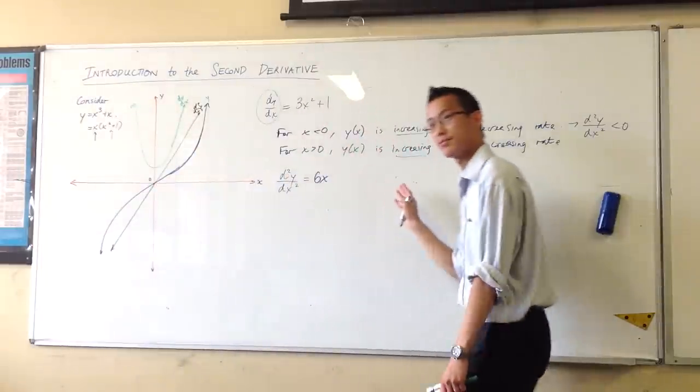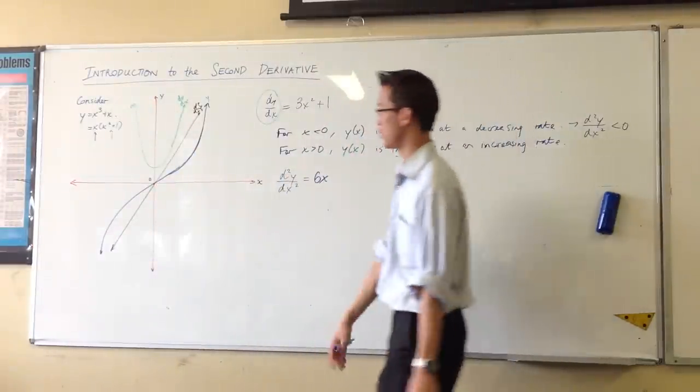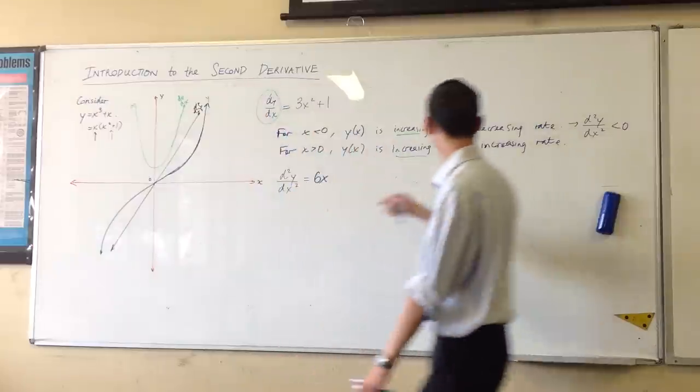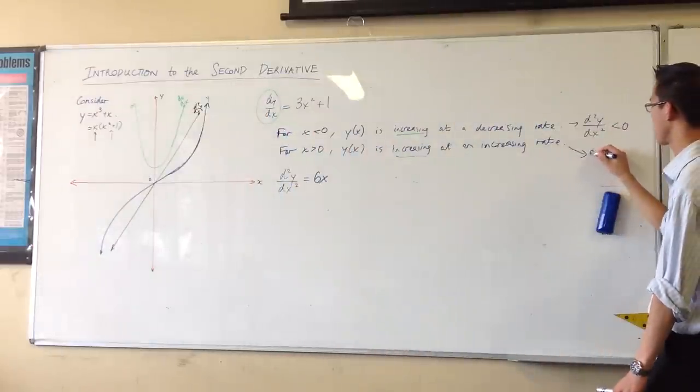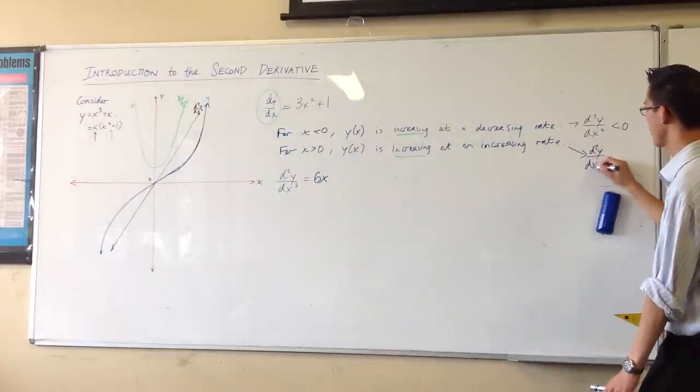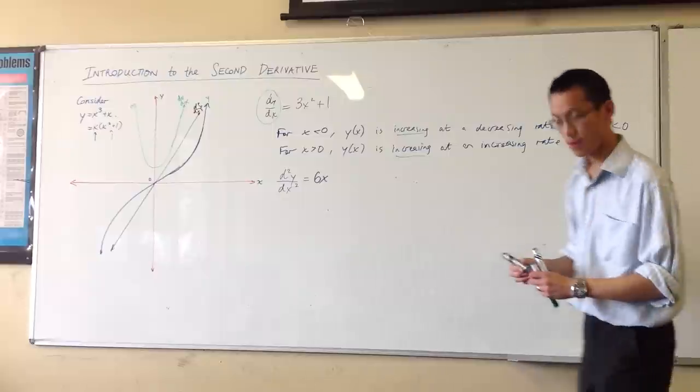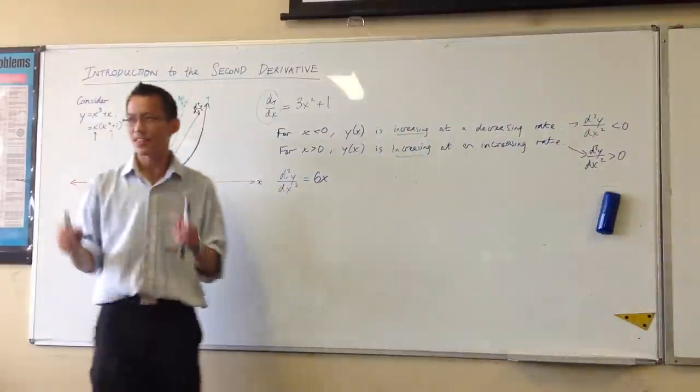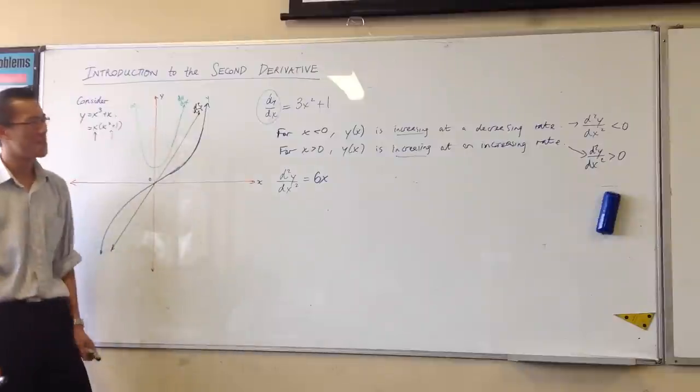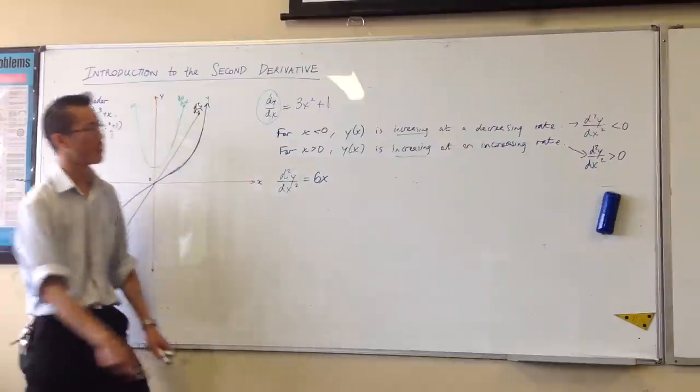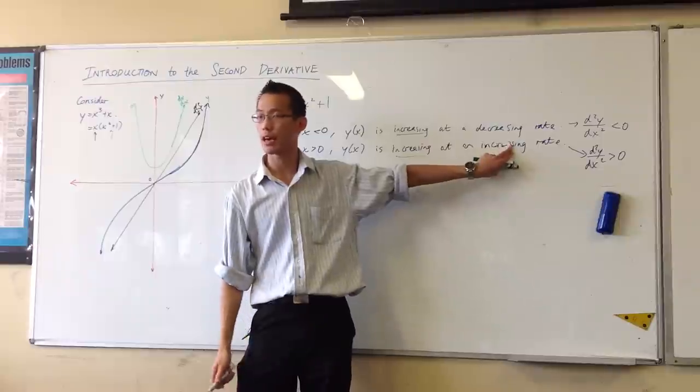And then when you pass the origin, the derivative starts getting bigger again, which is why the black graph is positive. So that's this part here. So, how's your brain going at the moment? We're trying to think about this in terms of the first derivative and how it's changing.